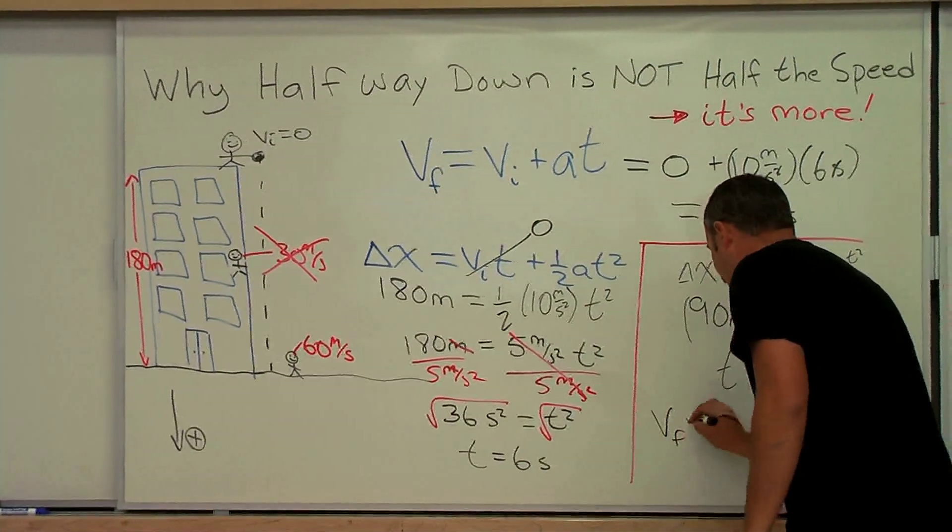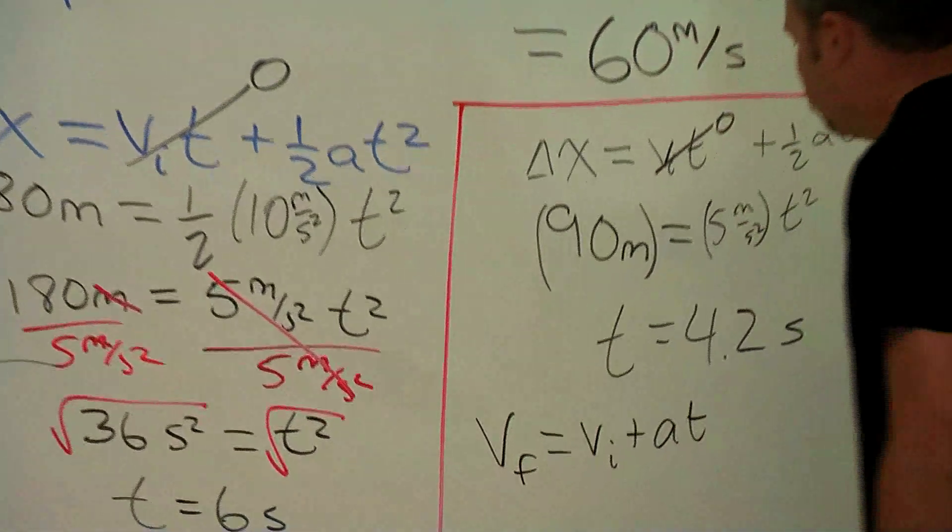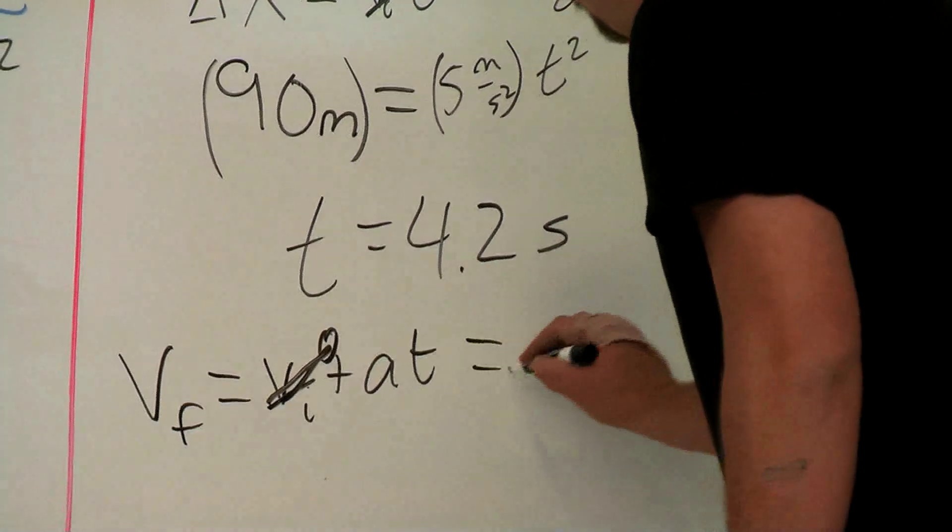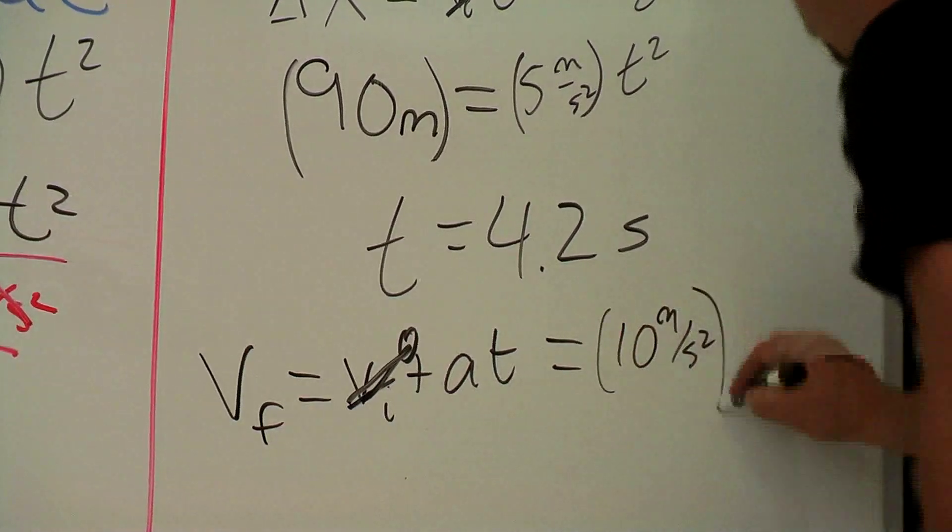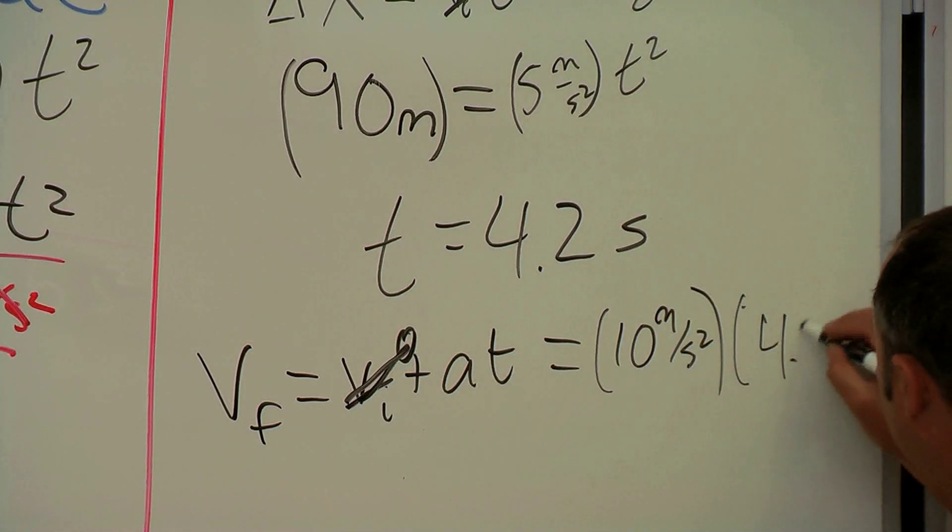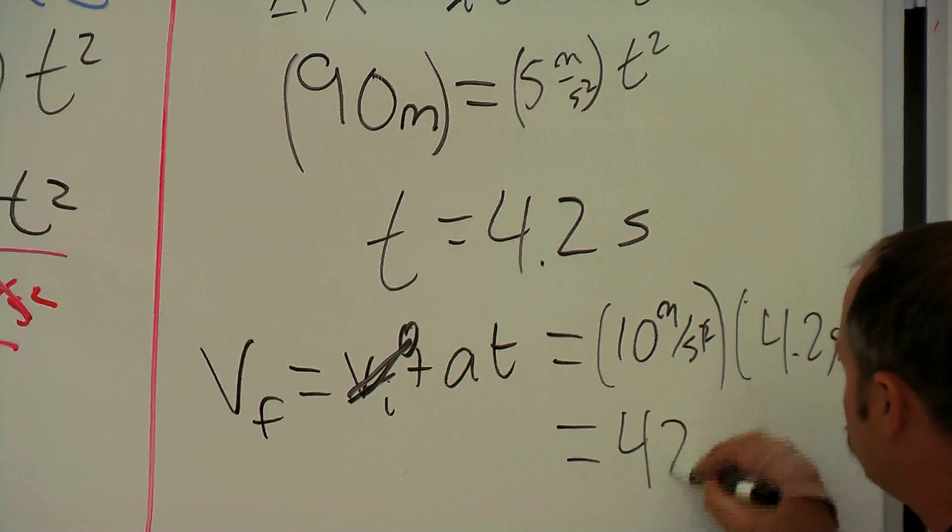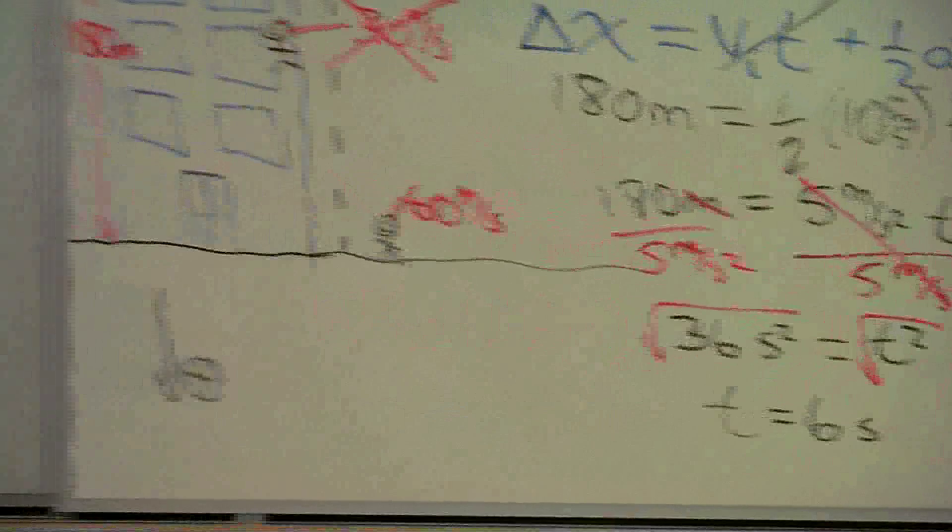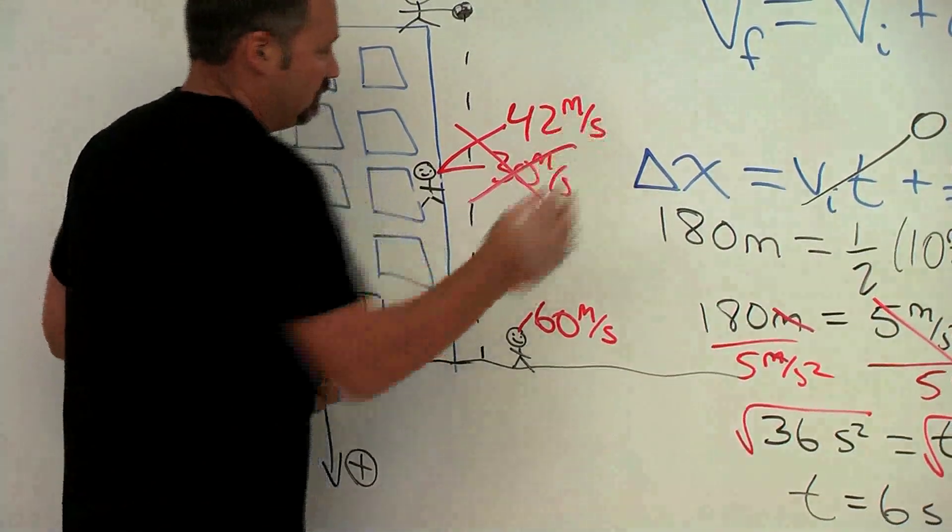We can plug in the numbers just to show it. It's just 10 meters per second squared times 4.2 seconds. These guys cancel and I get 42 meters per second. So this guy does not see half the speed, he sees much more than half the speed.